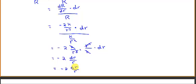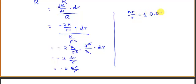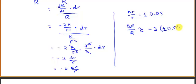The percentage error in the radius was plus or minus five percent, so delta r over r equals plus or minus 0.05. Therefore, the relative error in the resistance is approximately negative 2 times plus or minus 0.05. We use the approximation because we used differentials in this calculation.